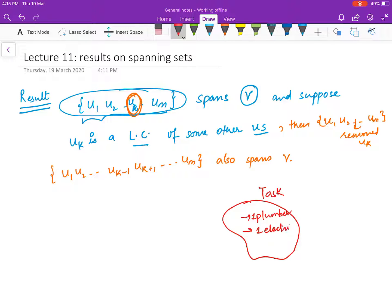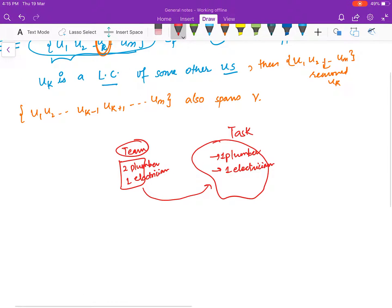And suppose you have a team which contains two plumbers and one electrician. Obviously this team can fulfill your task, and also from this team if you remove one plumber, that will also fulfill your task.